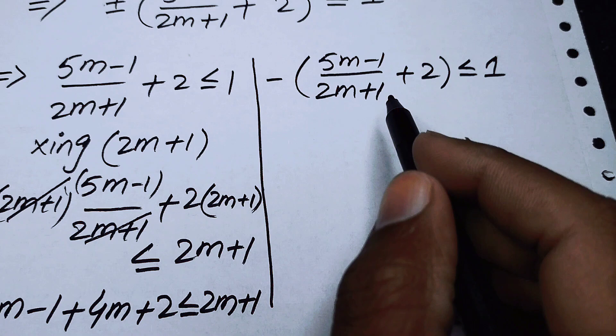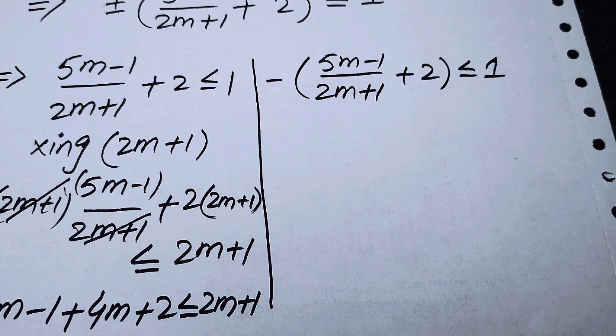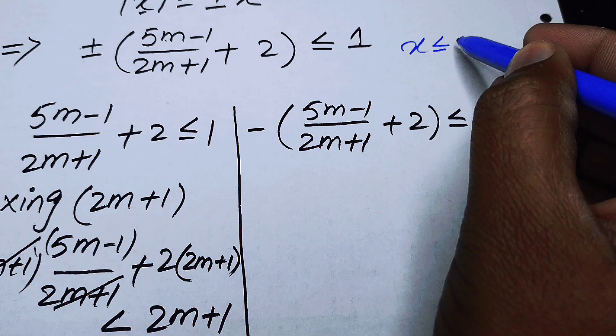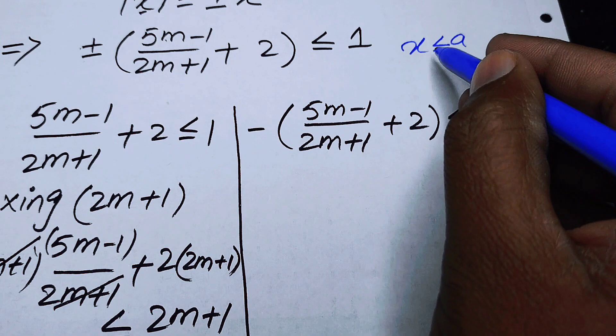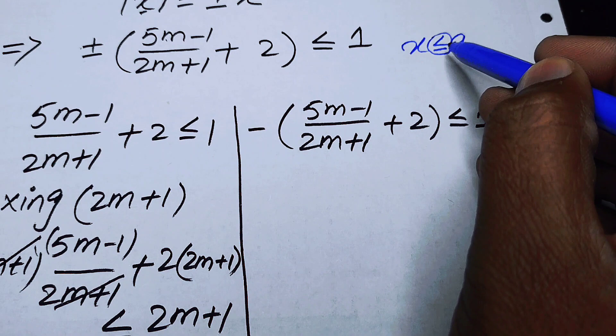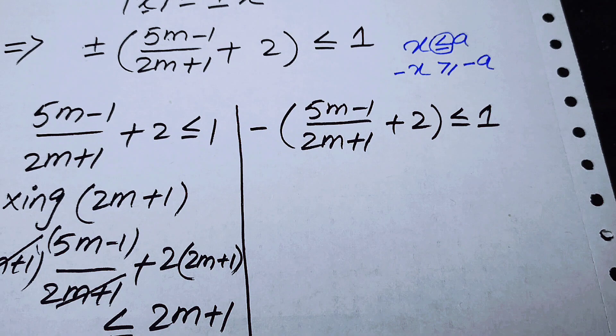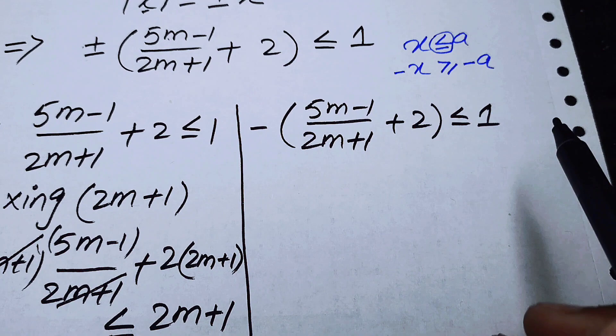For Case 2 we multiply the negative sign on both sides. Remember: when you multiply an inequality by a negative sign, the inequality reverses — if it was less than or equal to, it becomes greater than or equal to. So −x ≥ −a. The negative sign simply reverses the inequality.